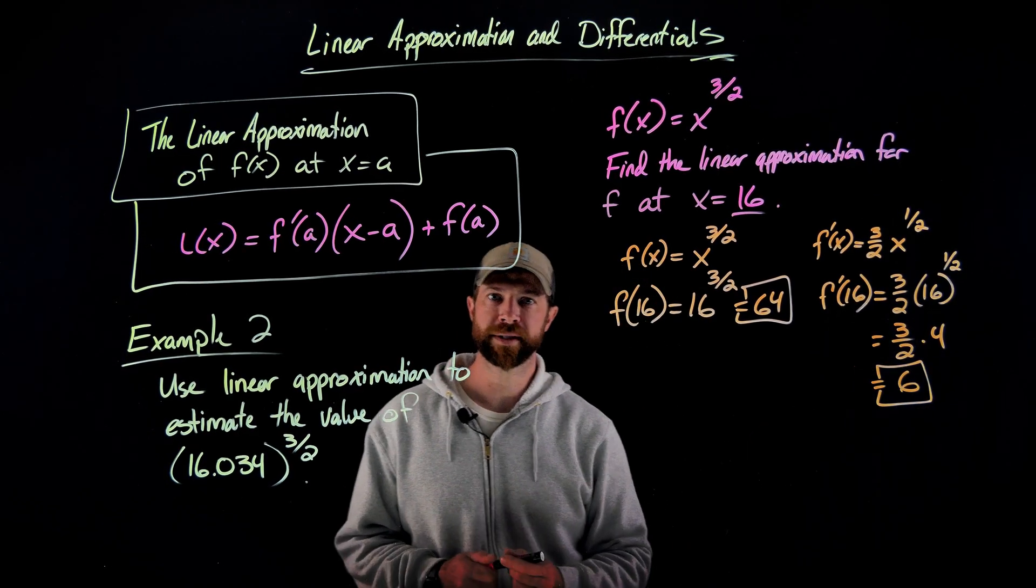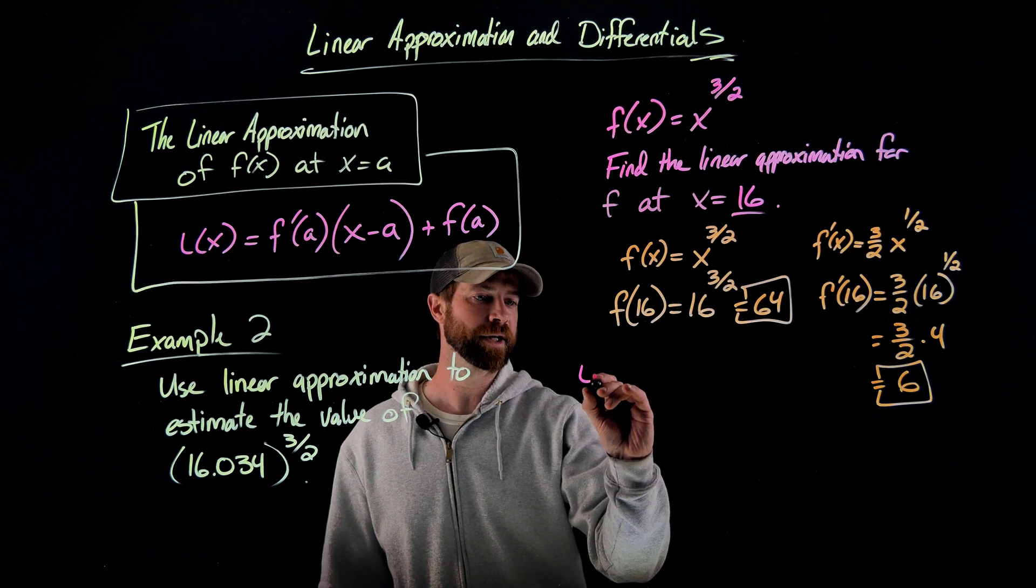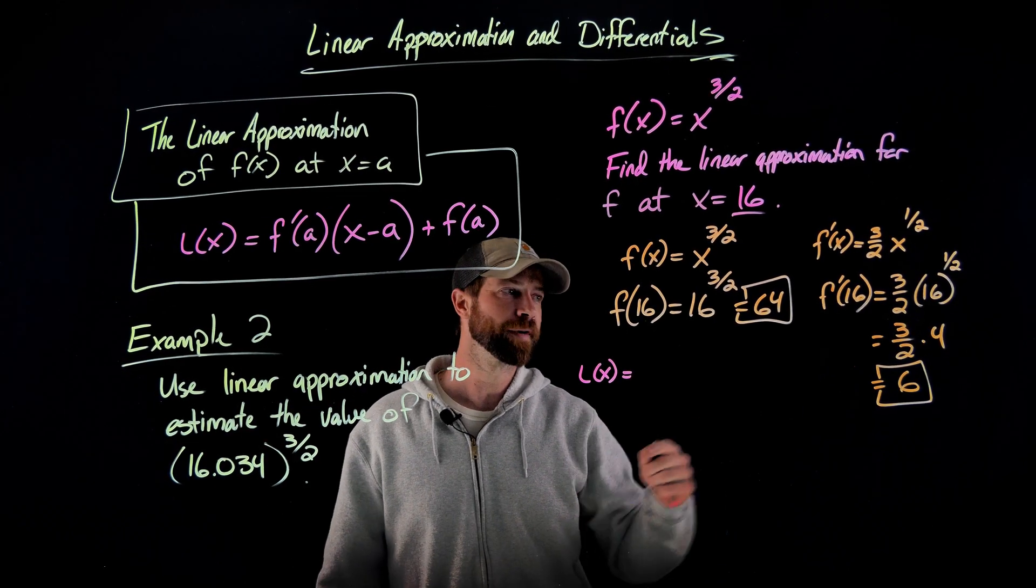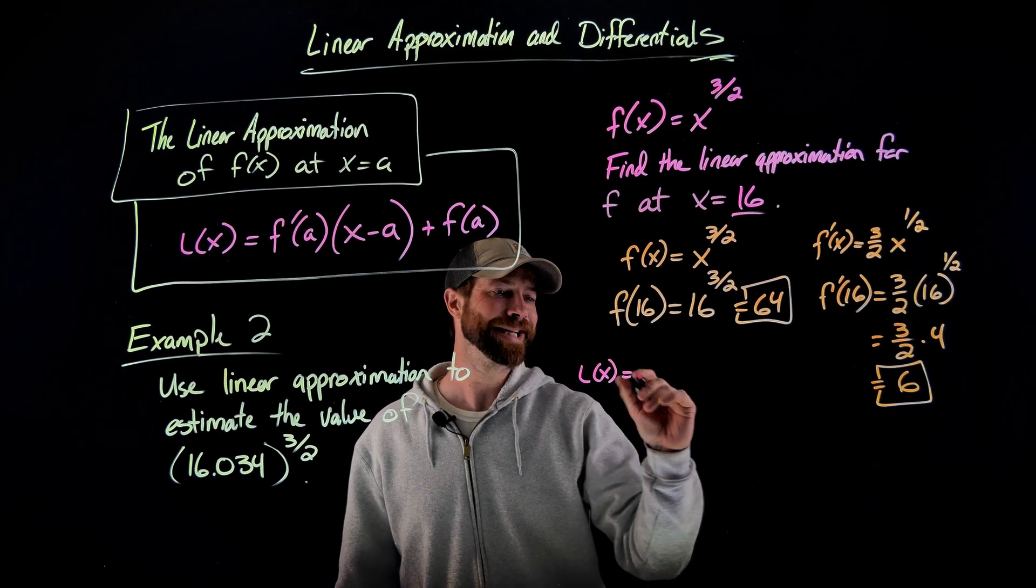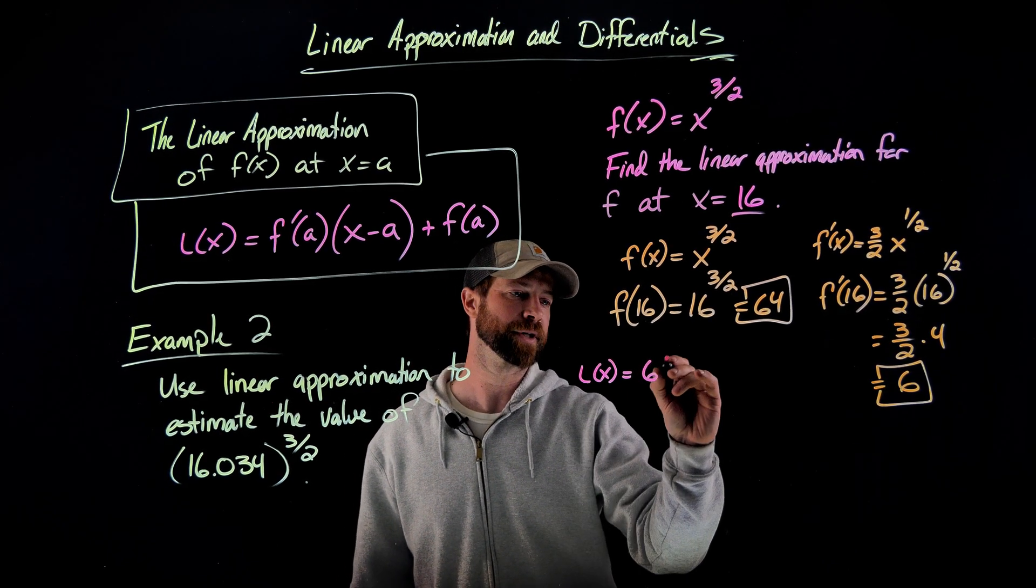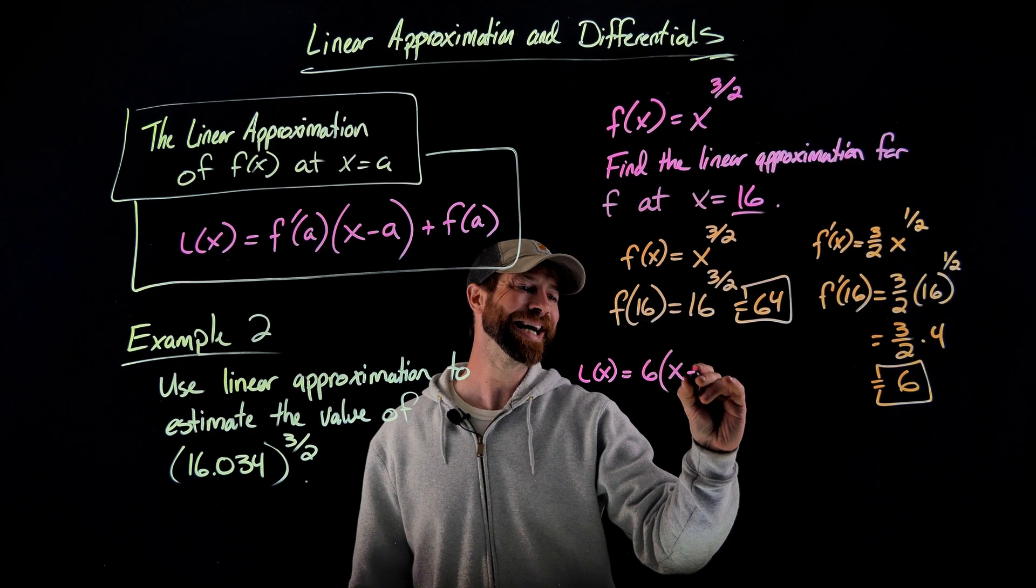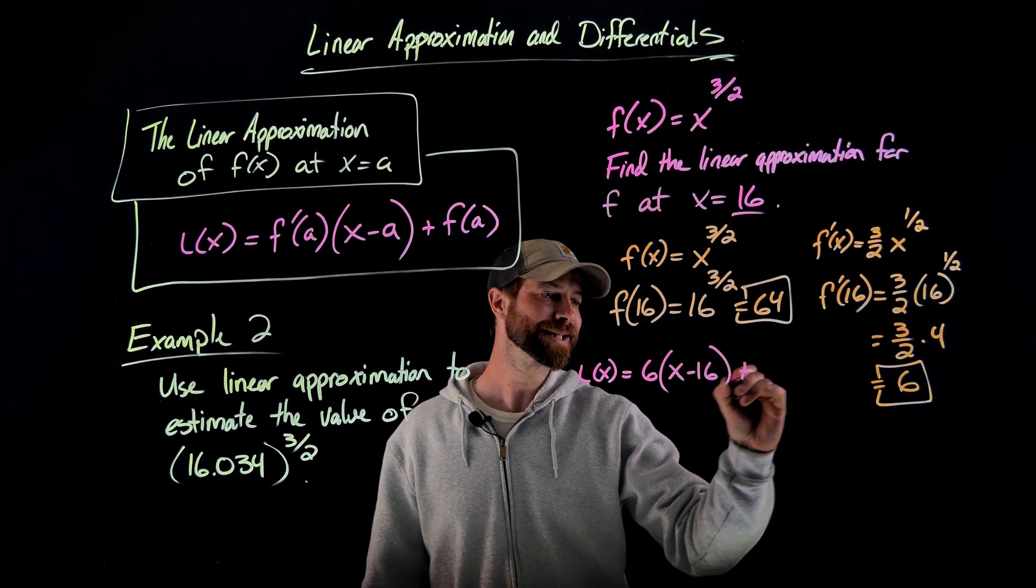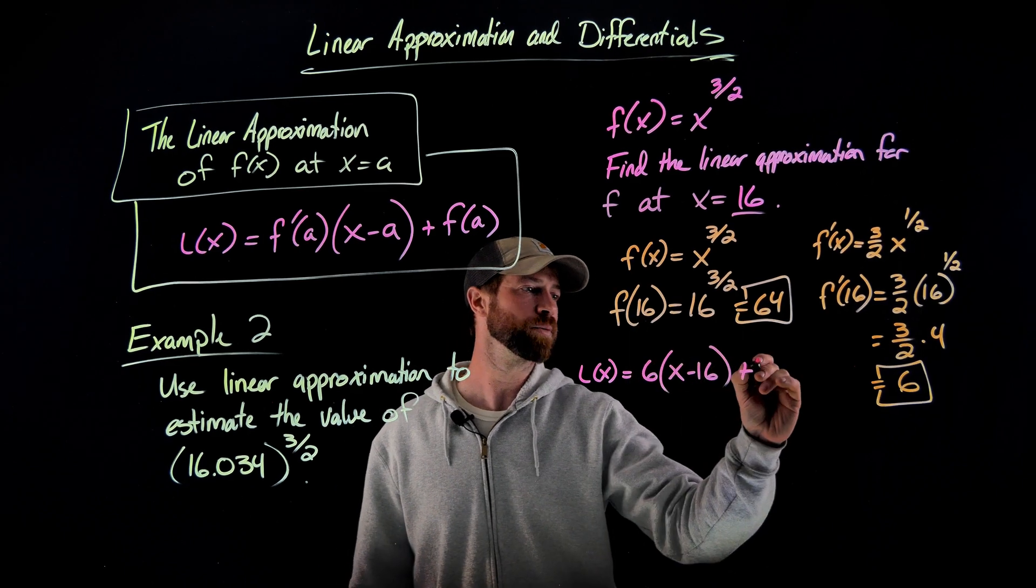So we've done all the tough work, and we now can find our linear approximation. So our linear approximation is first, the value of our derivative at our a value here is six, that's the slope of the tangent line, times x minus 16, minus that a value, plus the function value at 16, which is 64.